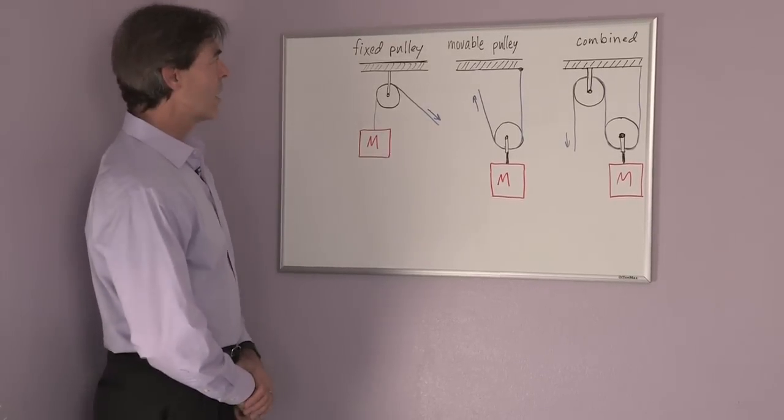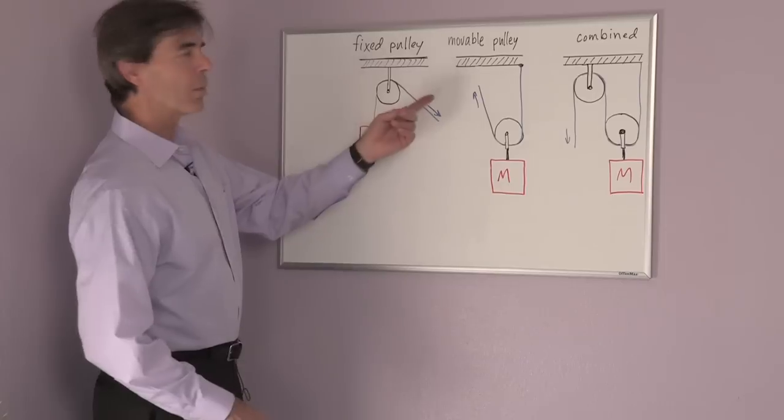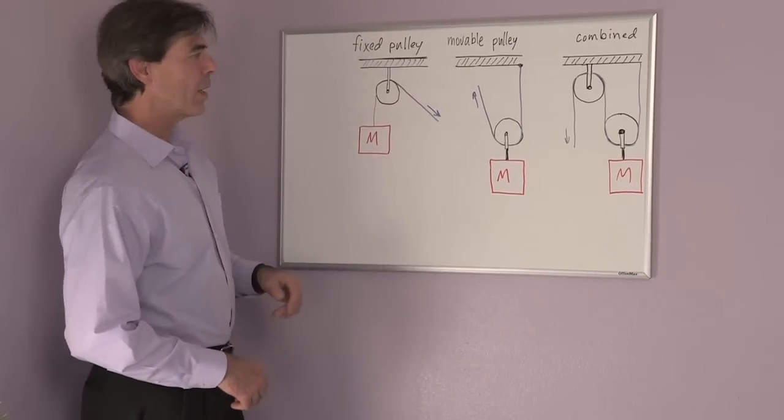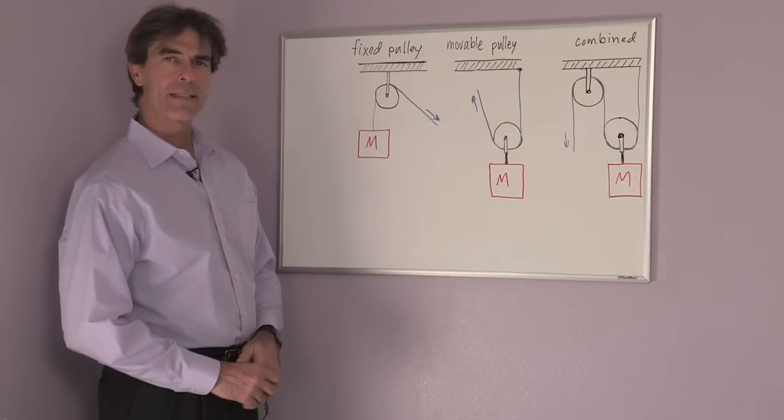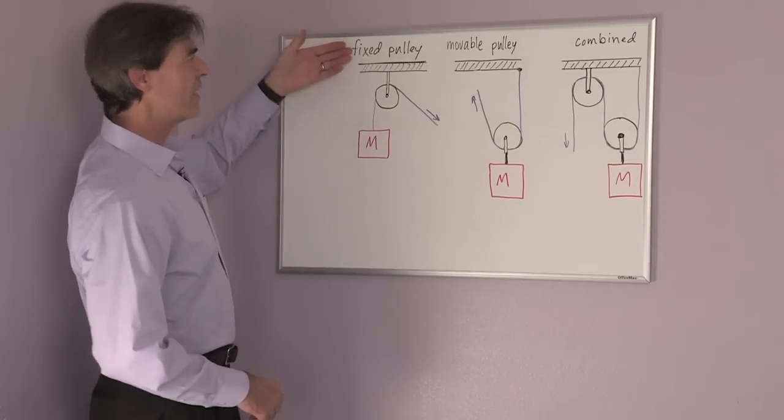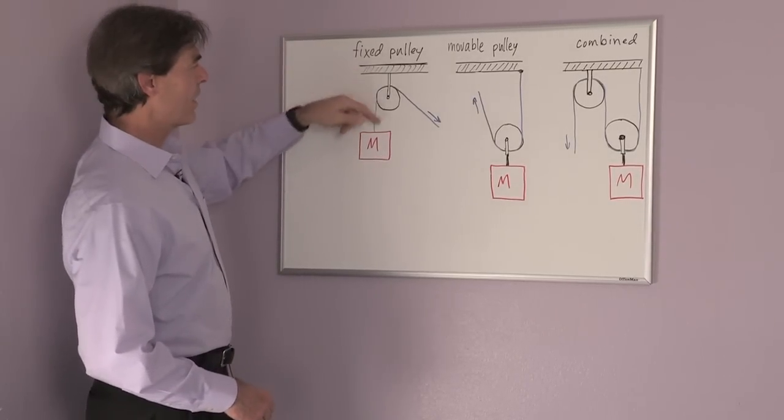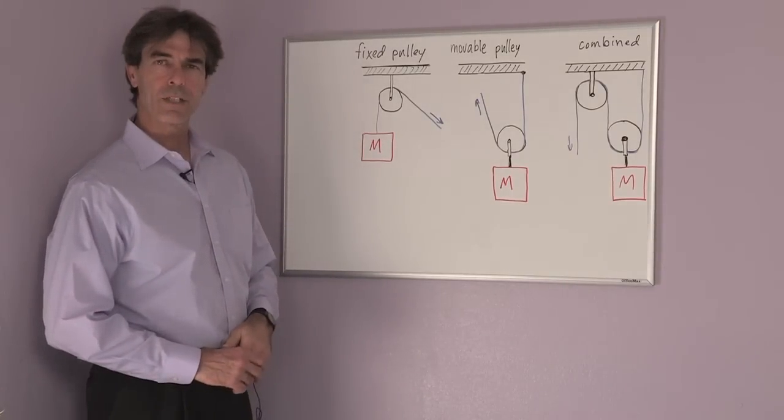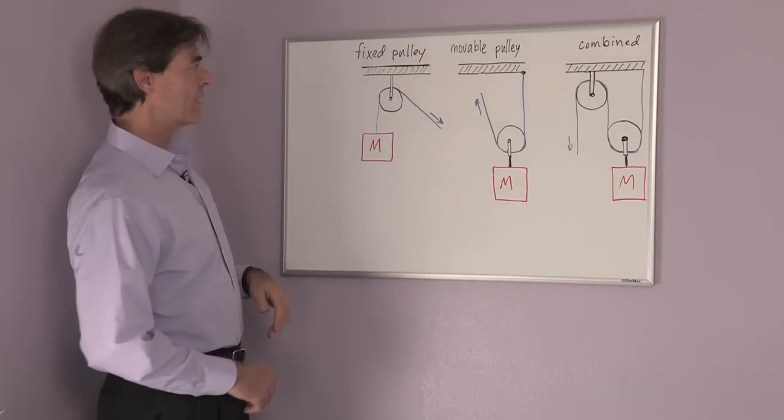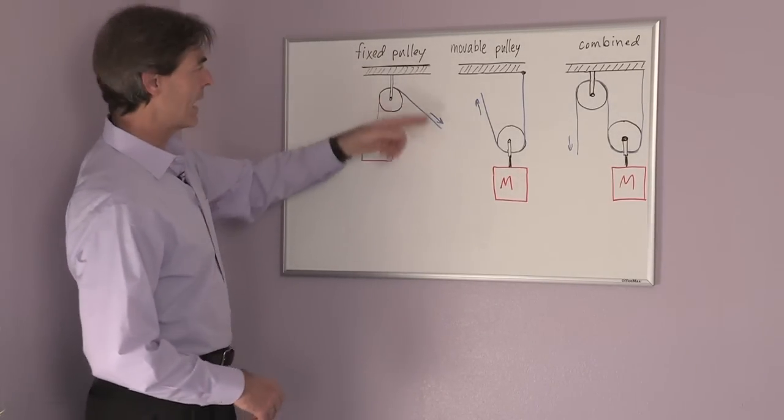First, let me define my terms. When I talk about a movable pulley, what I'm talking about is a pulley that is attached to the weight that we're trying to lift. In the case of a fixed pulley, the pulley is fixed and the mass that you're trying to lift is not attached to the pulley. It's attached to the string.